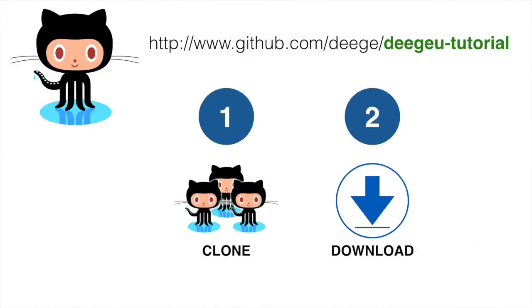All the tutorial source code for DGU is located on GitHub. The link for every repository can be found on the tutorial page. Just replace dgu-tutorial in the link for the tutorial you're looking for.